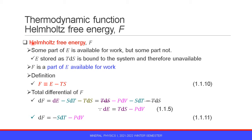The next thermodynamic function is Helmholtz free energy F. Helmholtz free energy F is important because some part of internal energy E is available for work, but some part is not. Namely, internal energy E contains energy stored as entropy T dS, which is bound to the system and therefore unavailable for work. Therefore, free energy F is the part of internal energy available for work.